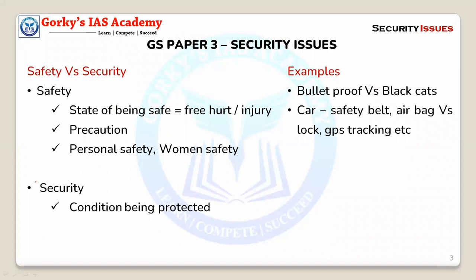Before going into larger perspectives, we need to understand certain words and terms we come across in current affairs and newspapers. First, we need to understand the difference between safety and security. Safety means a state of being safe — being unhurt — or protecting ourselves from injuries. It is a precautionary thing, largely put in an individual perspective: personal safety, your safety, my safety, women's safety, child safety. Safety is more individualistic or pertaining to a small, specific group.